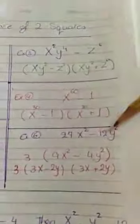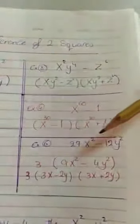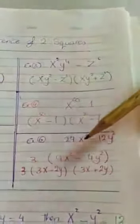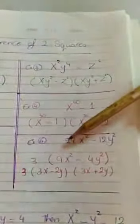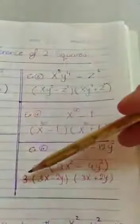Example 6, 27x squared minus 12y squared. 27 and 12 has no square root. I'm going to look for a common factor. Both are divisible by 3. So 3 here outside the bracket, and 27 divided by 3 equals 9x squared, minus 12 divided by 3 equals 4y squared. Factorize. I'm going to write also the 3 as it is. 3x minus 2y in a bracket, and the other bracket, 3x plus 2y.